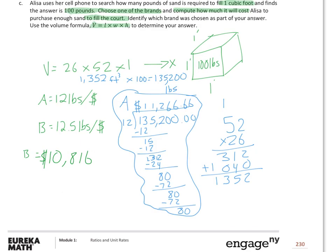When it's all said and done, you can do it by hand or use a calculator — you should be able to use a calculator on this test. Dividing a six-digit number by a decimal is possible: you just move the decimal over. Using B gives a cost of $10,816. Using A costs $11,266.67. So obviously we'd go with B because it's cheaper — but that's still a pretty big cost. Fun problem.